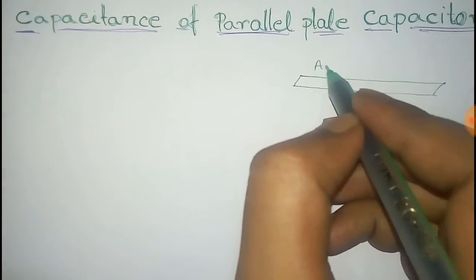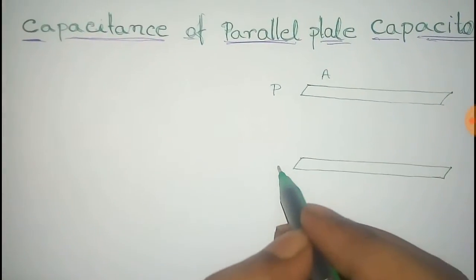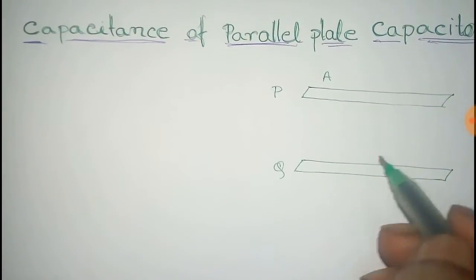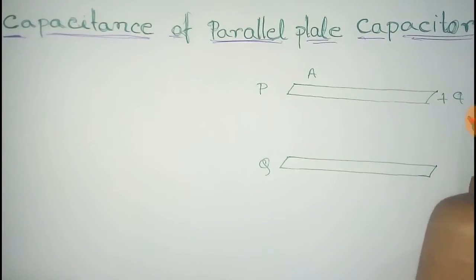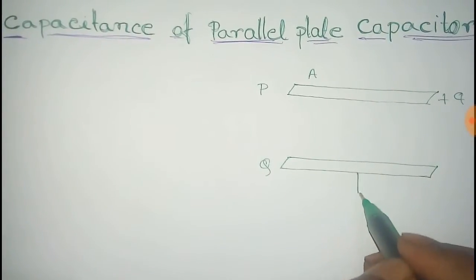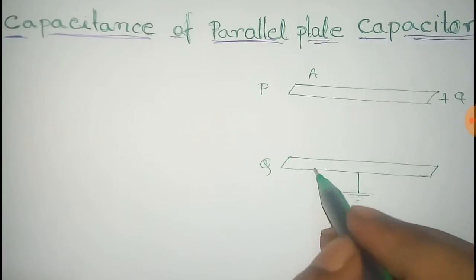Each of them has the surface area A. The first plate is taken as P and second plate is taken as Q. Positive charge +Q is given to the plate P, and the second plate Q is grounded. So there will be induced charge -Q on the second plate Q.